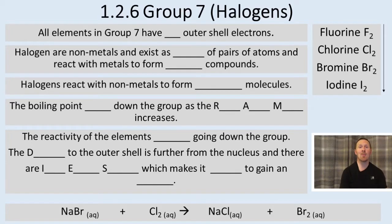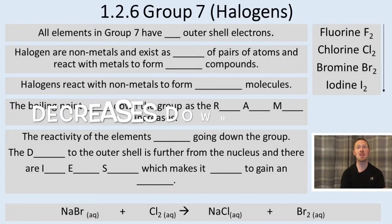Consider Group 1 elements. Group 1 elements get more reactive as you go down the group. However, Group 7 elements get less reactive down the group. The reactivity decreases.